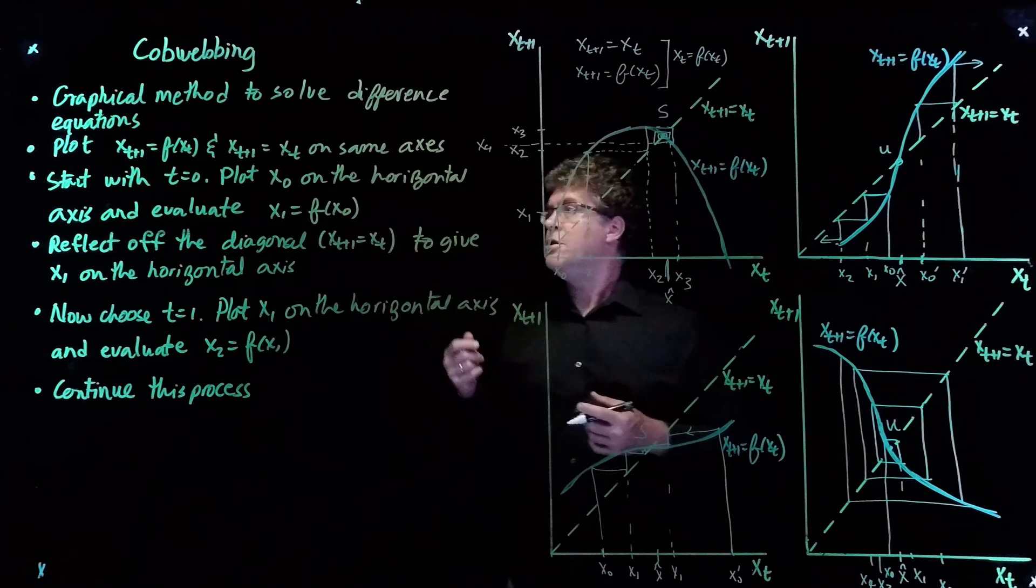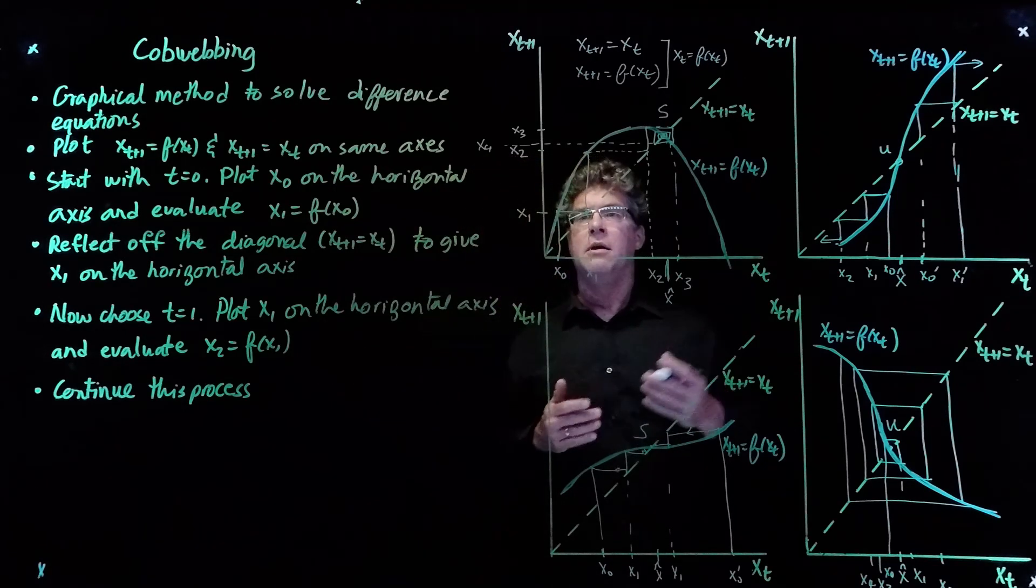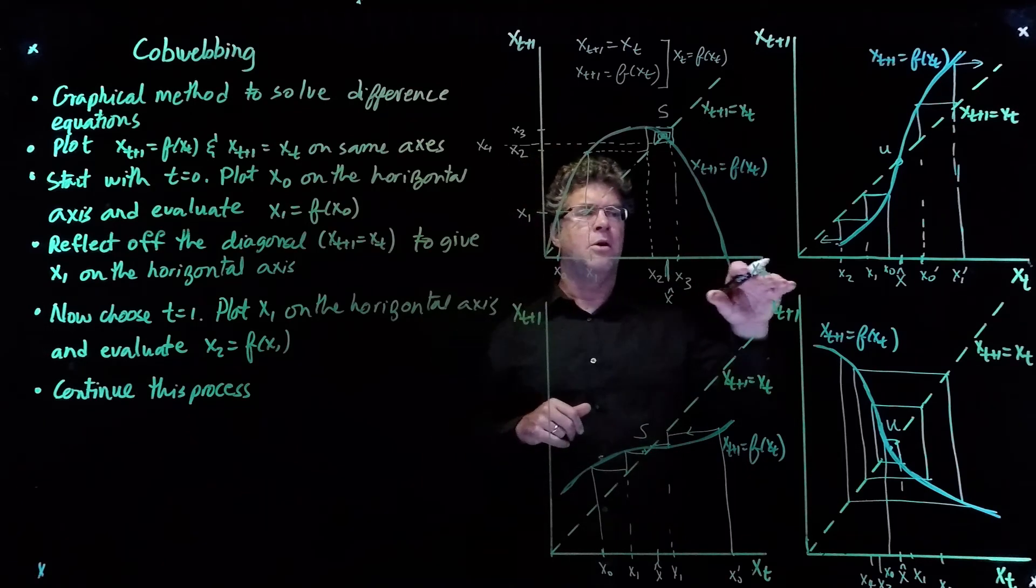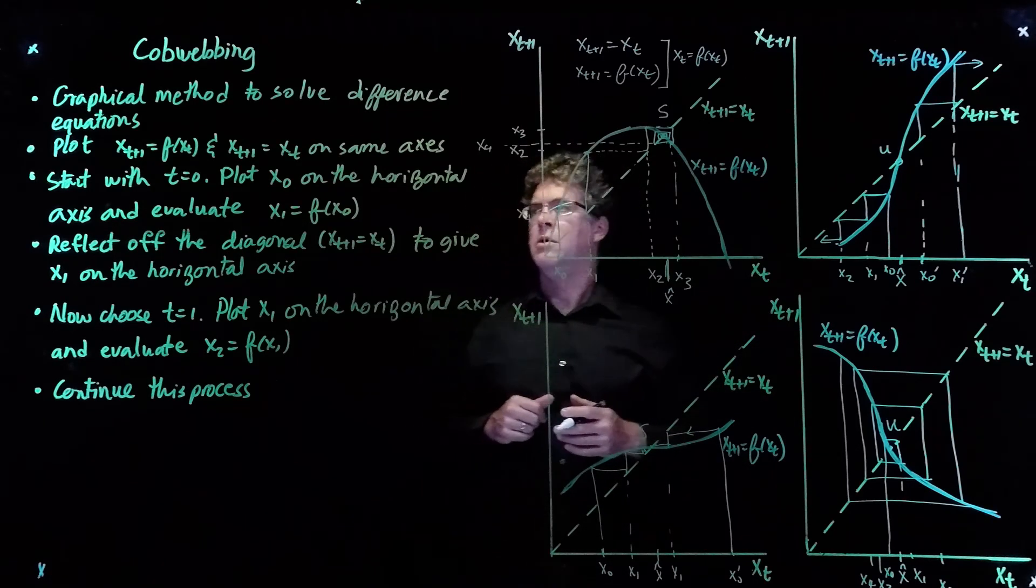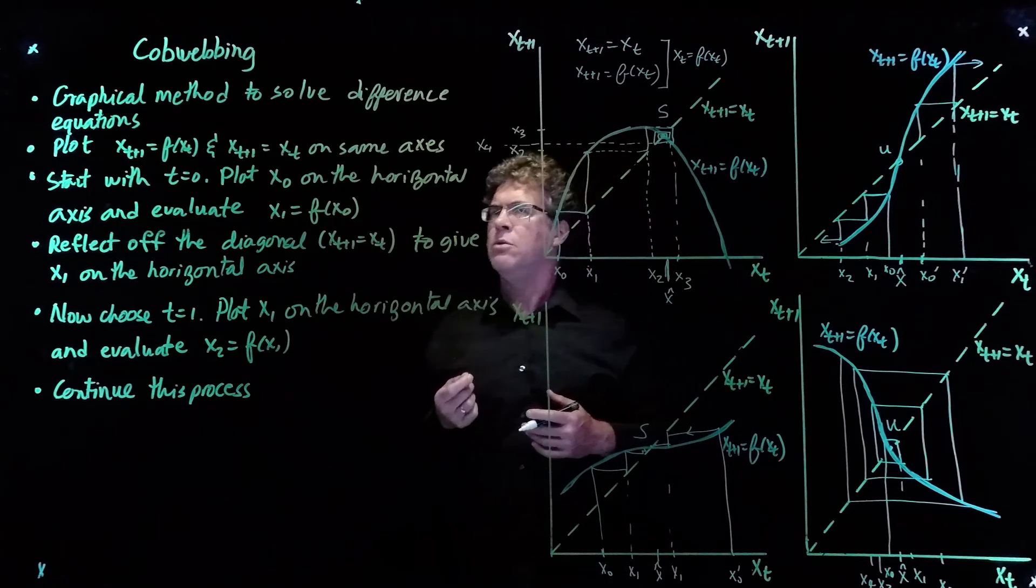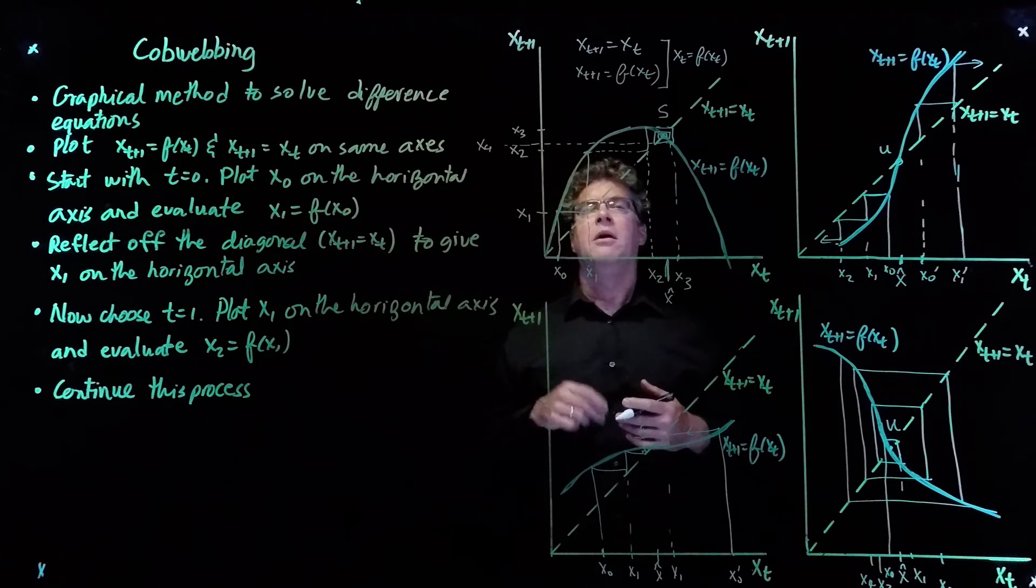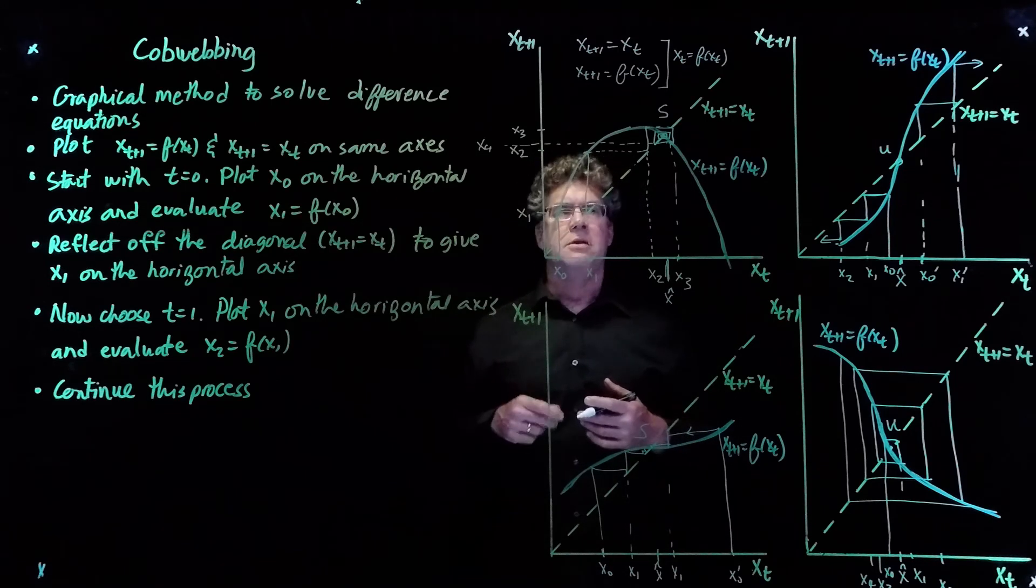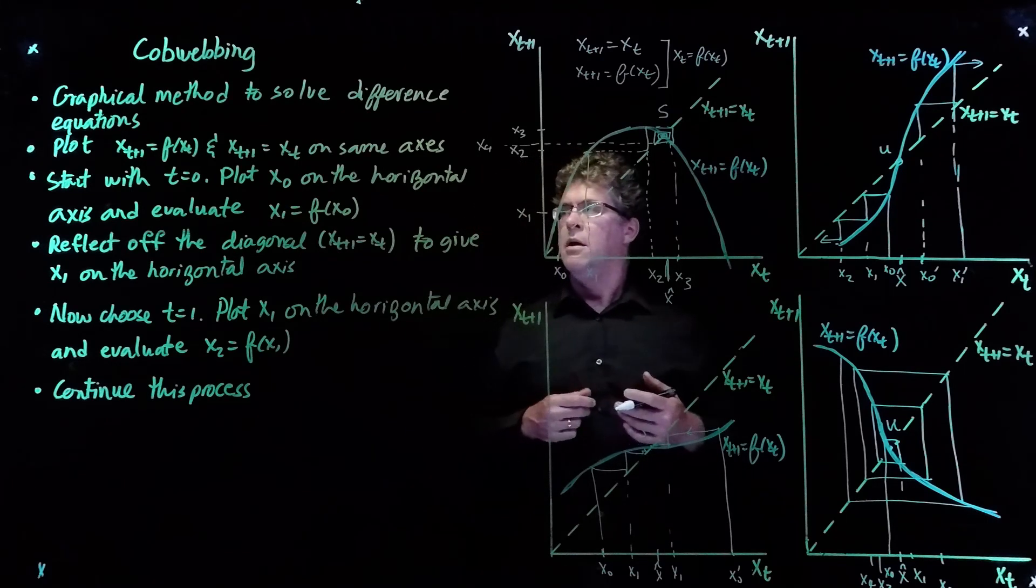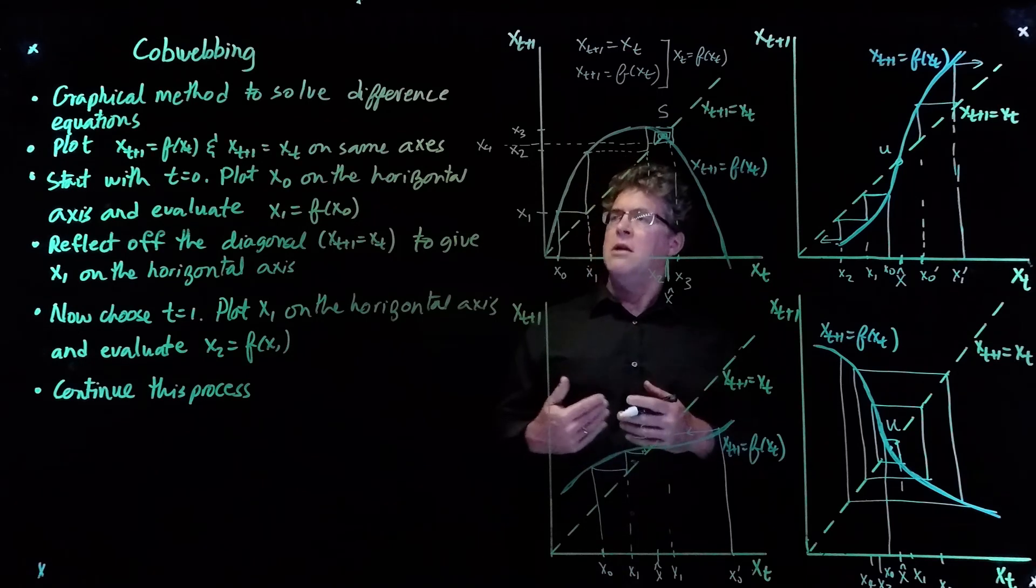And to recap, you need to plot your function f(x_t) and the 45-degree line on the same axes. And those axes are x_t on the horizontal, x_t+1 on the vertical. The key thing here is to choose an x_0 value on the horizontal axis, and you start the cobwebbing process by going up to f(x_0). And then you continue from there. You reflect off the diagonal to allow you to update your time step.